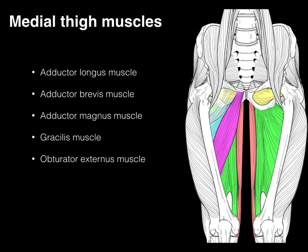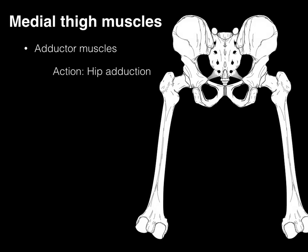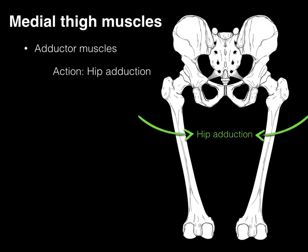There are our five medial thigh muscles. Something many of these muscles have in common is they all attach — or many have attachments — to the linea aspera on the back of the femur, which is why it's dotted. As for their primary action, these adductor muscles are all going to cause hip adduction. When these muscles contract, they bring the thighs in — hip adduction. Those are their primary action together.